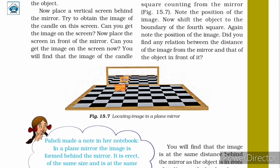After fixing the mirror vertically on the line drawn on the chess board, place a pencil sharpener at the boundary of the third square counting from the mirror, as shown in figure 15.7. Here, we are locating the image in a plain mirror — count three squares and place the sharpener at the boundary of the third square.